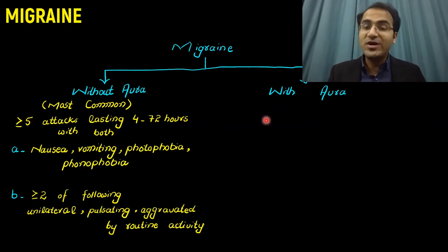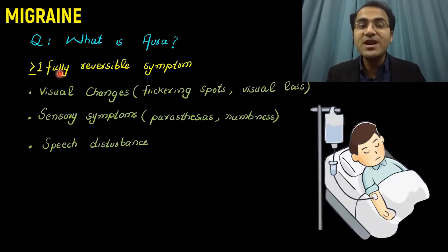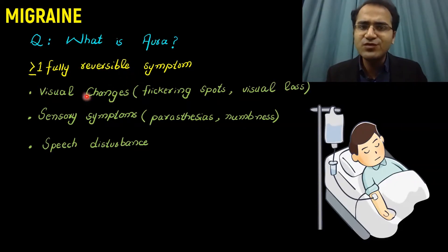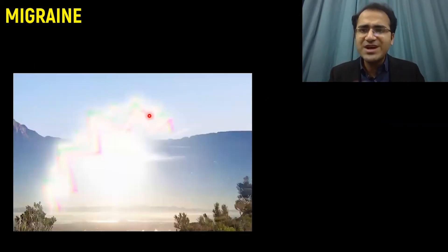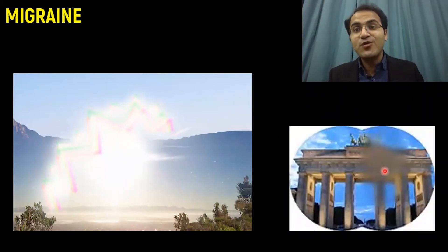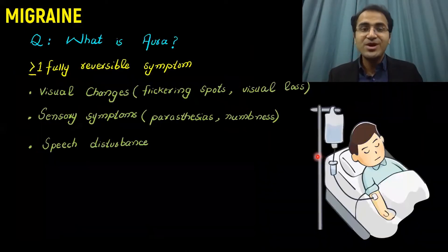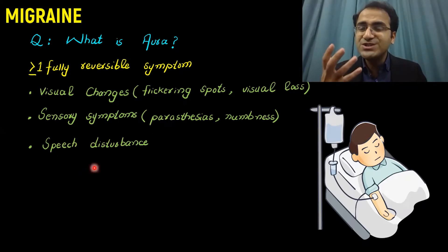Coming to migraine with aura. To understand migraine with aura, we need to understand what is an aura. Aura is basically one or more fully reversible neurological symptoms, like visual changes — flickering spots in the visual field, visual loss, or blurring of the visual field. This picture shows flickering lights in the visual field — this is an aura. Another picture shows an aura where there is blurring of the vision.